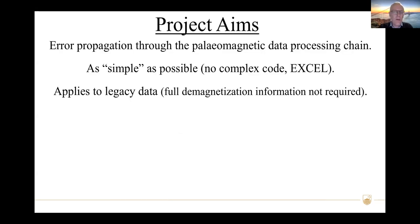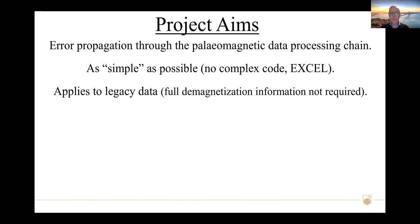The aims of the project that Andrew and I were working on were to come up with an error propagation scheme that can move through — or give us a way to propagate uncertainty through — this paleomagnetic data processing chain. We set ourselves a couple of targets: we wanted it to be as simple as possible — something people can just code up themselves in Excel. The other important thing was we wanted it to apply to legacy data, where you don't have full demagnetization information available, including individual thermal or AFD magnetization steps.